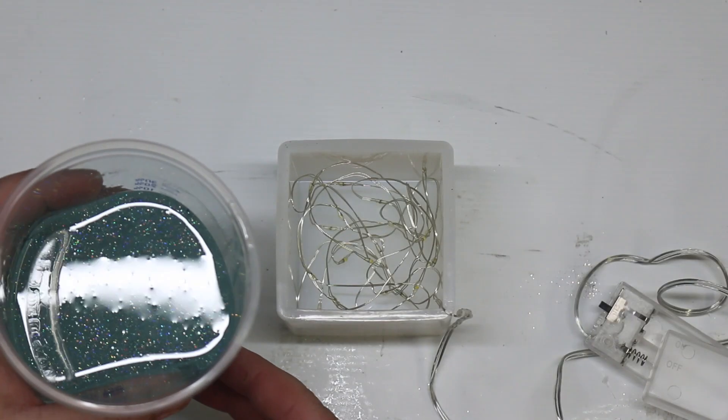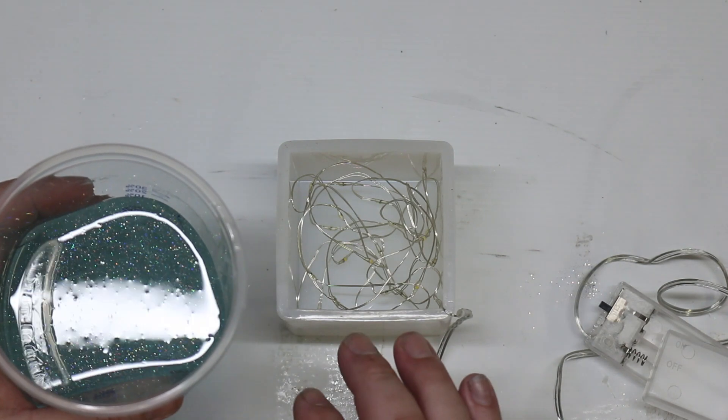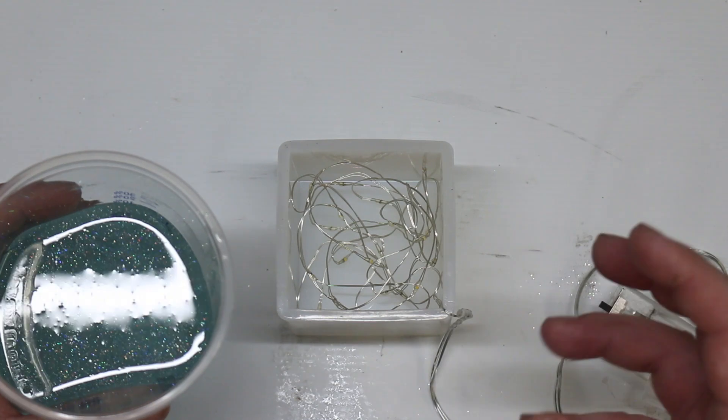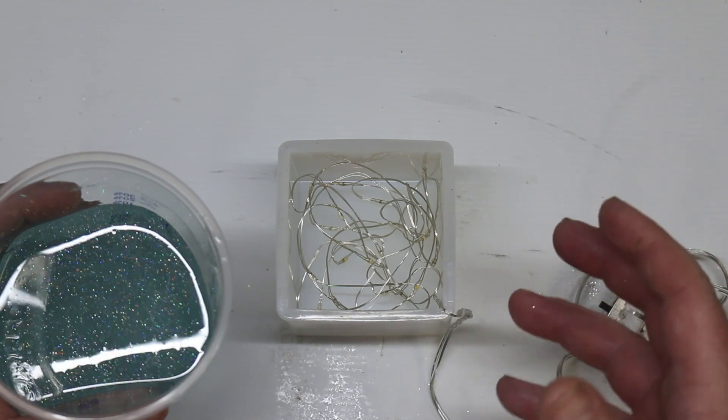So it's now time to pour in the resin. I'm not too worried if I get any bubbles in this one. This project won't be going in the pressure pot either, because I actually kind of want some bubbles. I reckon it'll be a nice effect with the lights.